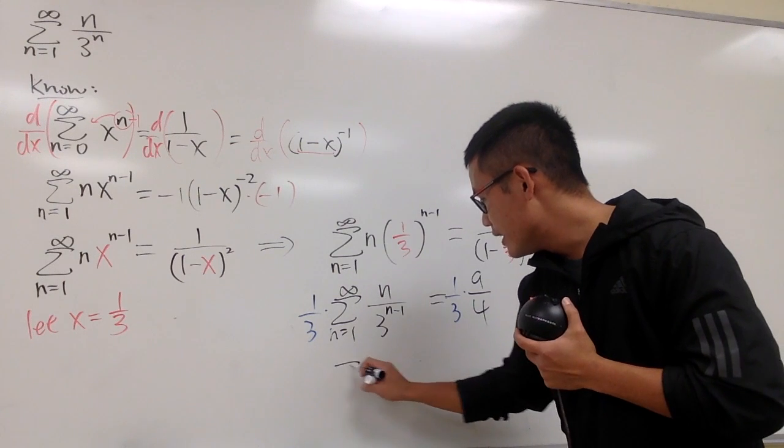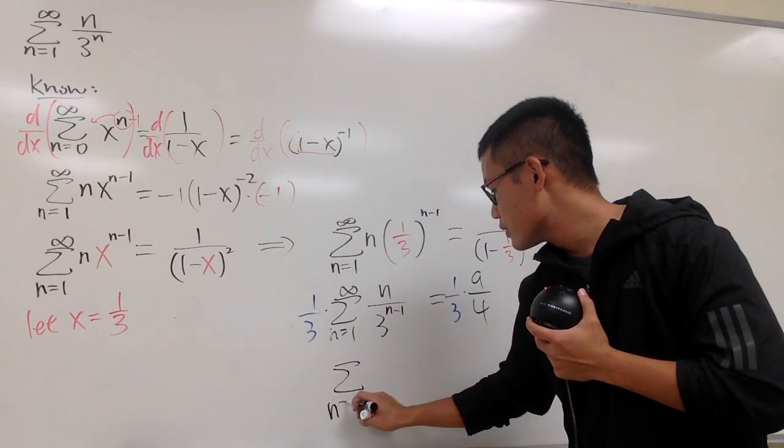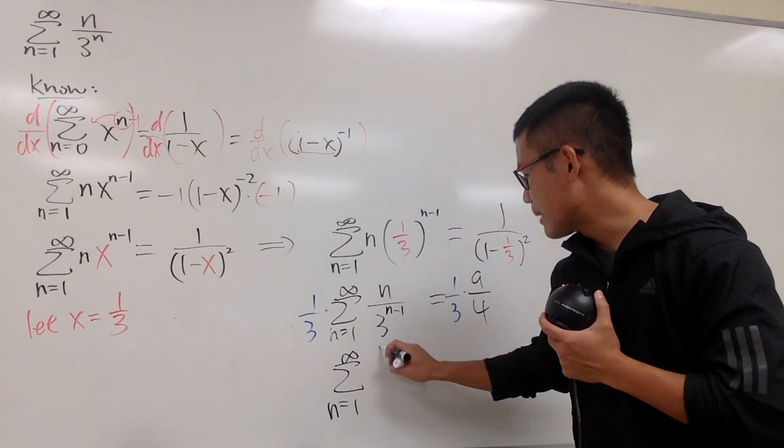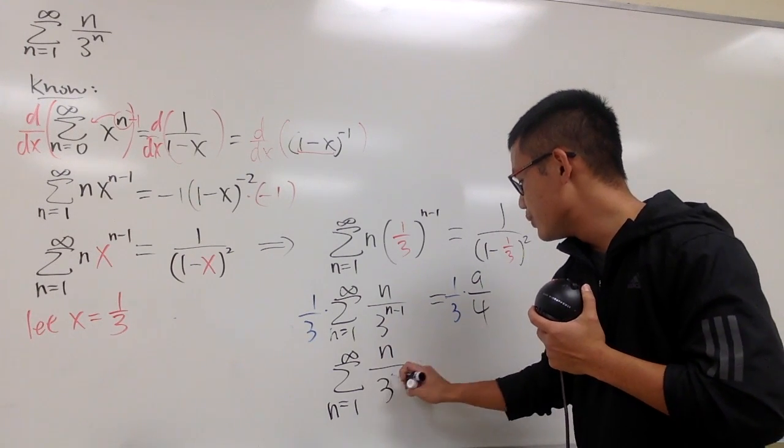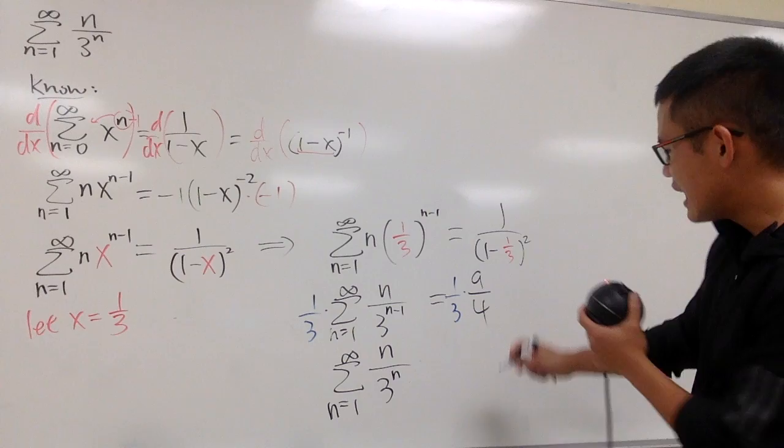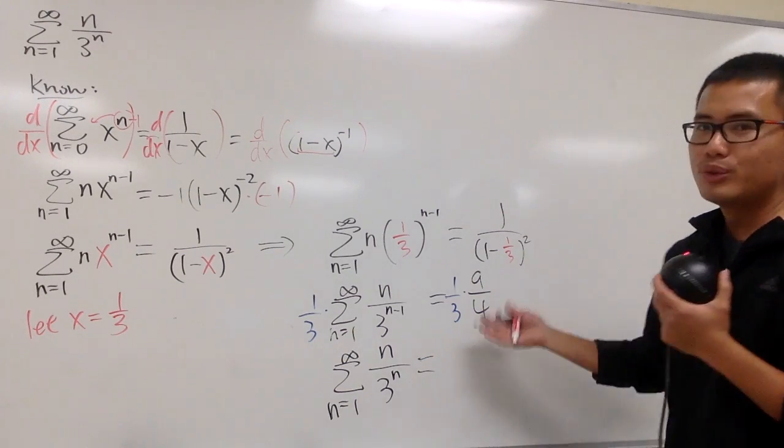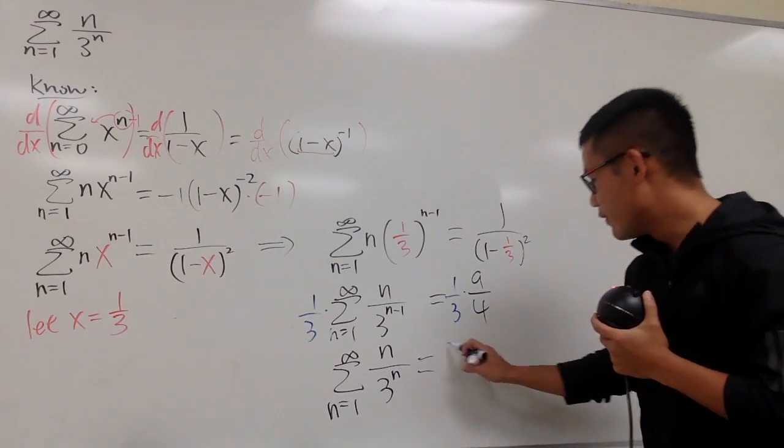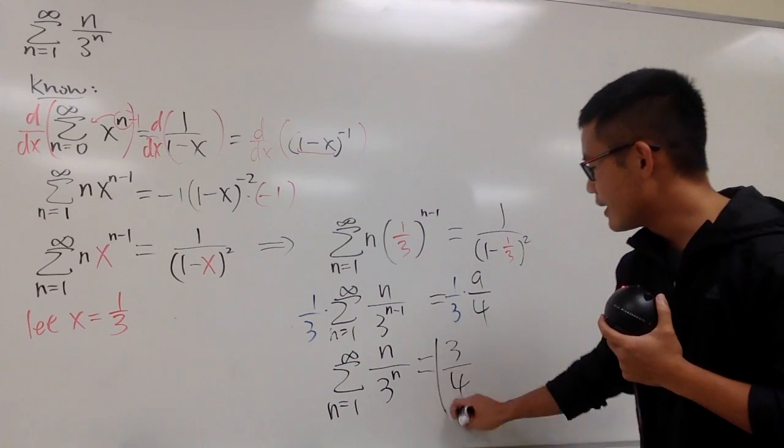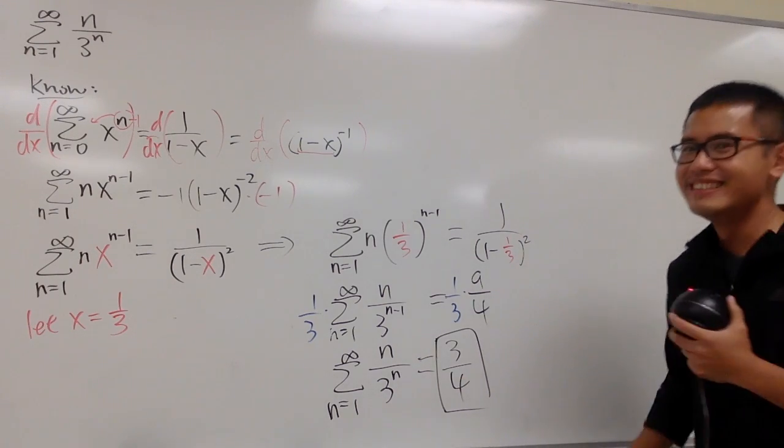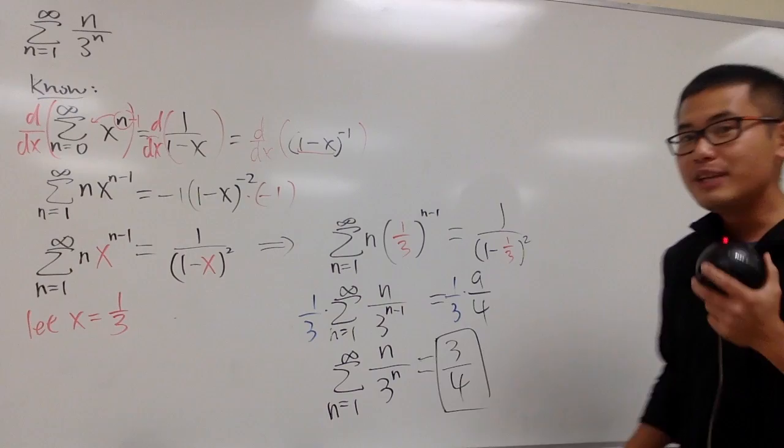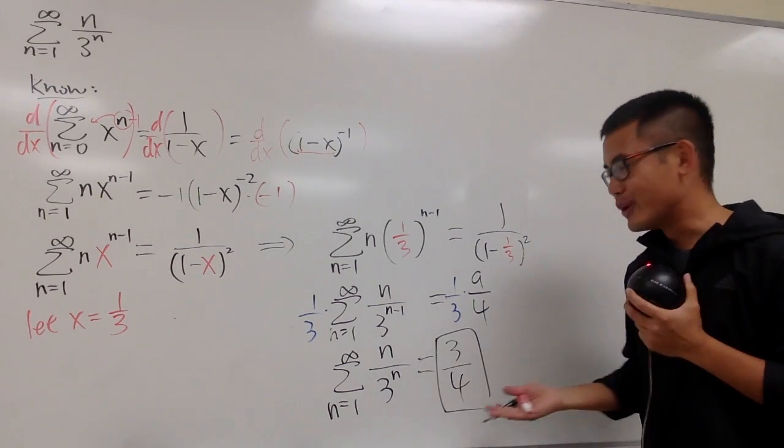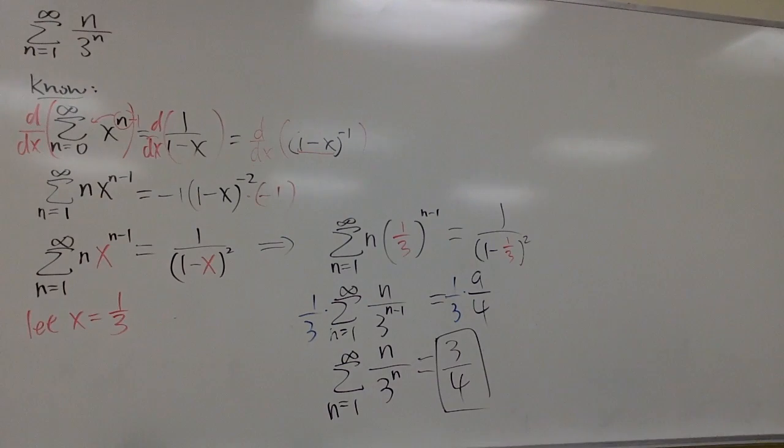On the left-hand side, you get the sum from n equals 1 to infinity of n over 3 to the nth power now. On the right-hand side, you multiply the fractions, 1 third times 9 over 4, which gives 3 over 4. You should be able to do the fractions. Anyway, that is it. So cool, right?